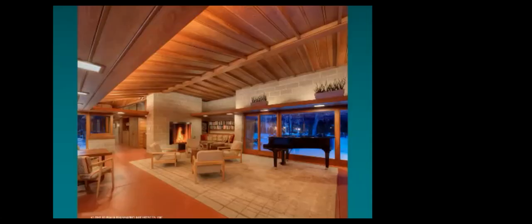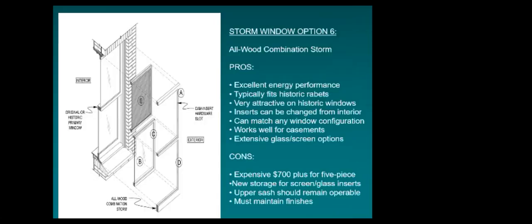Here's the interior of the Edelman House — it is Frank Lloyd Wright after all. An all-wood combination storm is the most expensive option, where even the frames for the inserts are made of wood, using cams to lock into the exterior frame. It feels the most historically appropriate, but very expensive — even a fairly small window in mahogany would exceed $700 given the number of parts and machining involved.